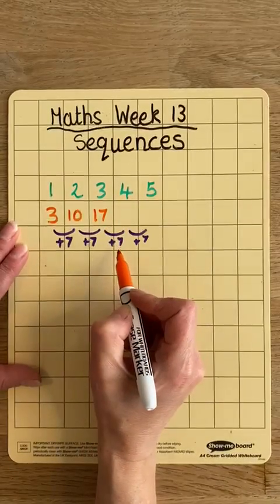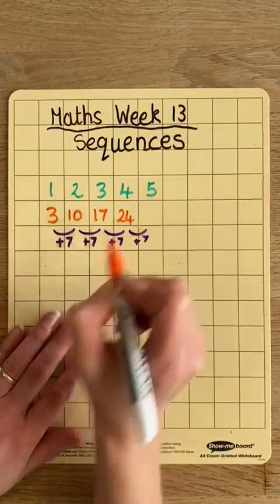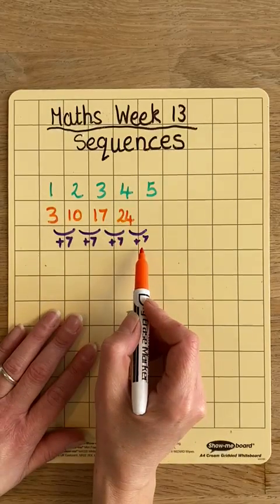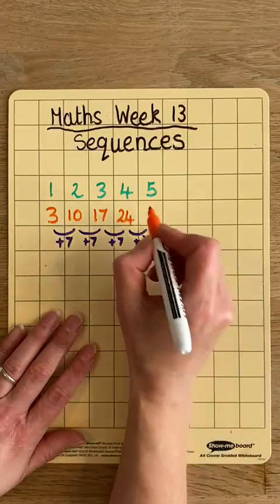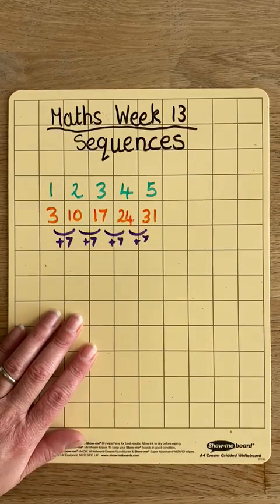17 add 7 is 24. So that gives me the fourth term. And then 24 add 7 is 31. That's the fifth term, and that's the answer to my question.